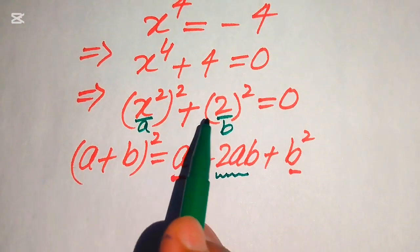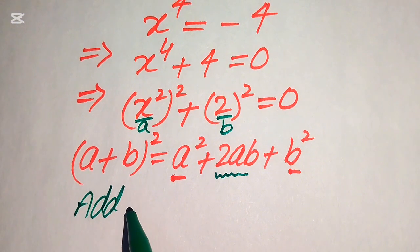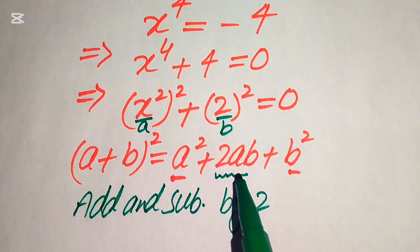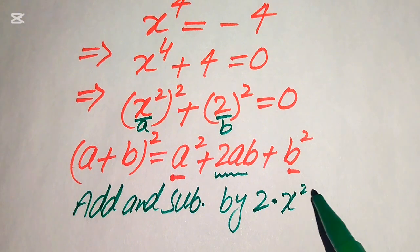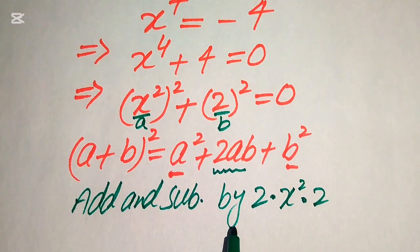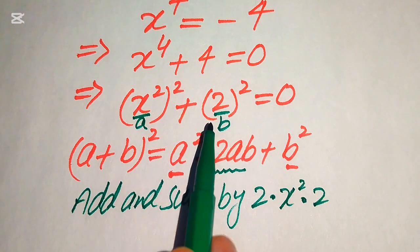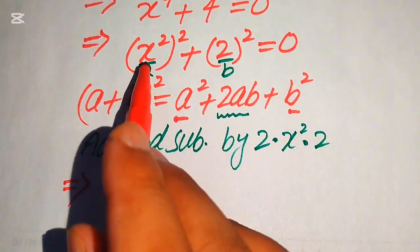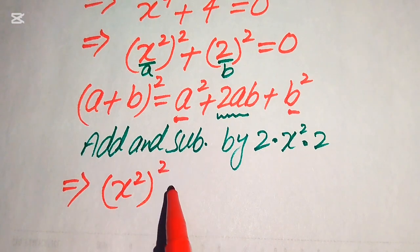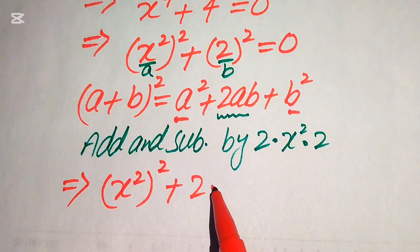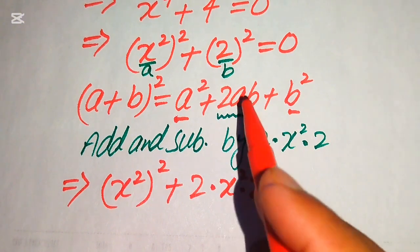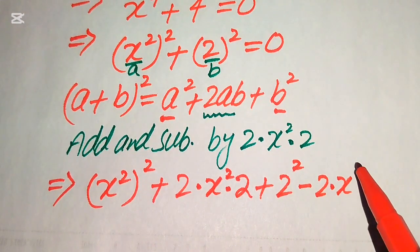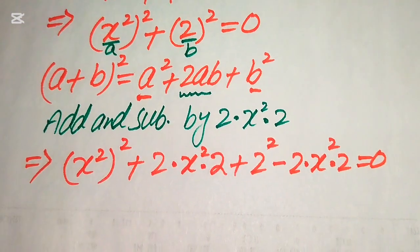In order to complete the square we need to add and subtract 2ab from the equation. Here a is x squared and b is 2, so 2ab equals 2 times x squared times 2. We add and subtract this term on the left hand side, giving us: (x²)² plus 2 times x squared times 2 plus 2 squared, minus 2 times x squared times 2, all equals zero.